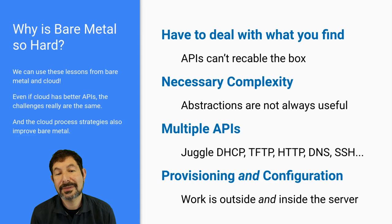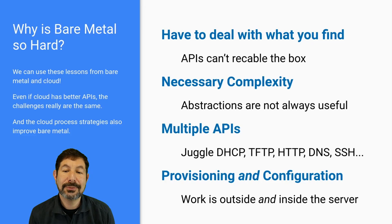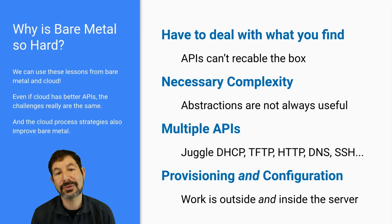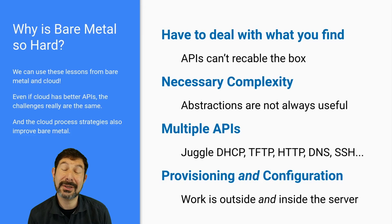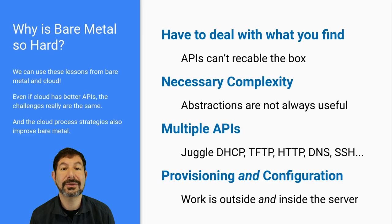You can't use APIs to re-cable a box; you have to take things as they come. Bare metal is what it is — you get what you get. The other thing that's important is necessary complexity. Abstractions are not always helpful, especially in bare metal, where you actually have to know the enumeration of drives or which NIC is cabled to which port. That complexity is something you have to cope with. If you oversimplify things, you actually make your job a lot harder. We see that when people build APIs that reduce everything to one command — just give me a box and an OS — bare metal is going to require more.